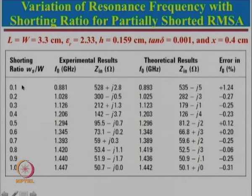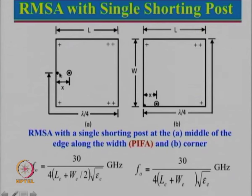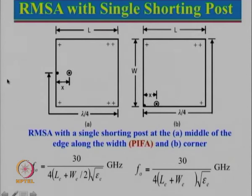This configuration gives rise to the lowest frequency, or for a desired frequency it gives the lowest required length. When w_s is small, we get the compact size. Here we use a single shorting post at the center. The length will be equal to lambda by 4, and the field variation will be 0 here, plus here, double plus here. From the radiation point of view, recall that for a rectangular patch there were two slots radiating — one here and one there — giving a total radiation pattern for RMSA without any shorting, the slot radiation pattern multiplied by the array factor.